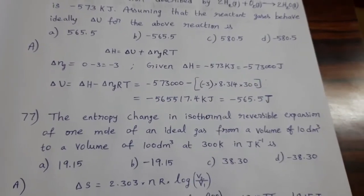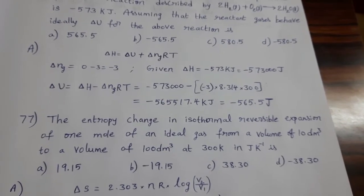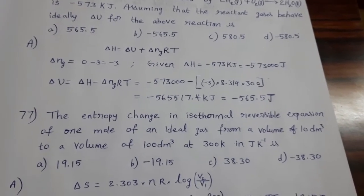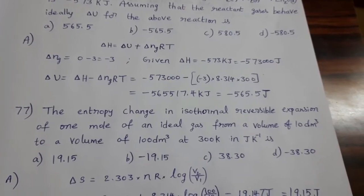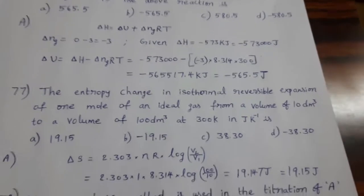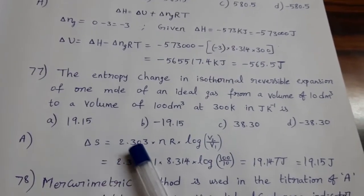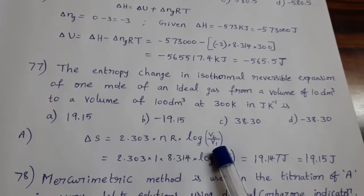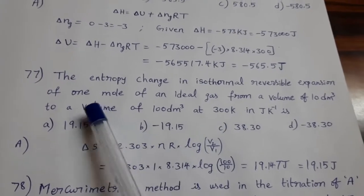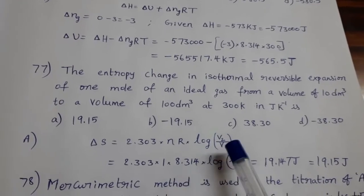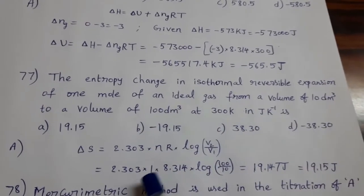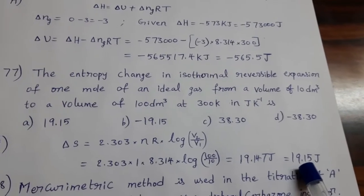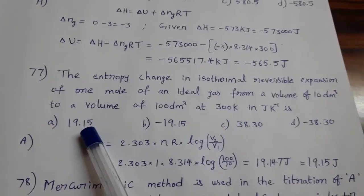The entropy change in isothermal reversible expansion of one mole of an ideal gas from a volume of 10 decimeter cube to a volume of 100 decimeter cube at 300 kelvin in joule kelvin inverse is: delta S = 2.303·nR·log(V2/V1). Then substitute number of moles that is one mole, R value 8.314, V2 means 100, V1 is 10. Substitute all the values then we can get delta S 19.15 joule.